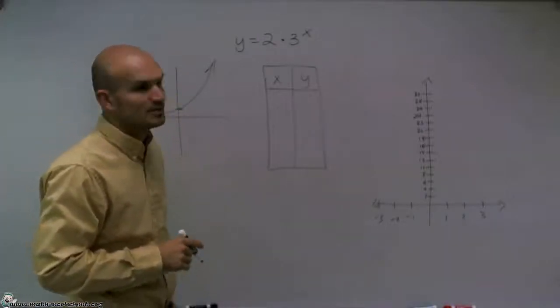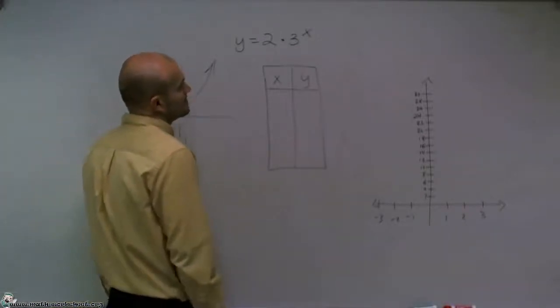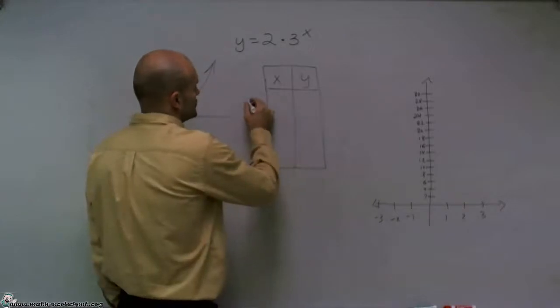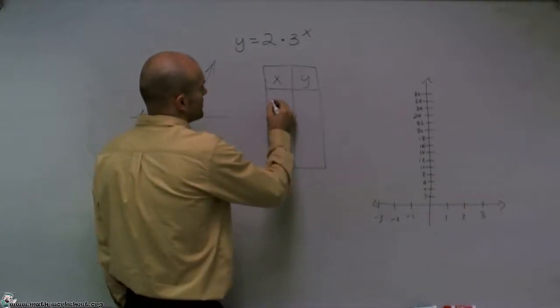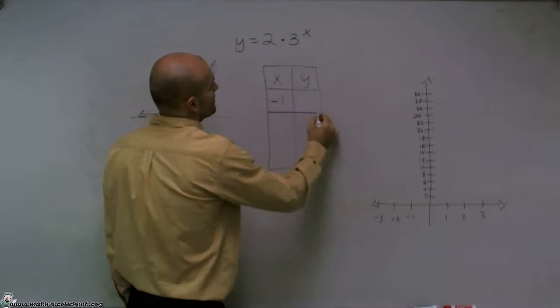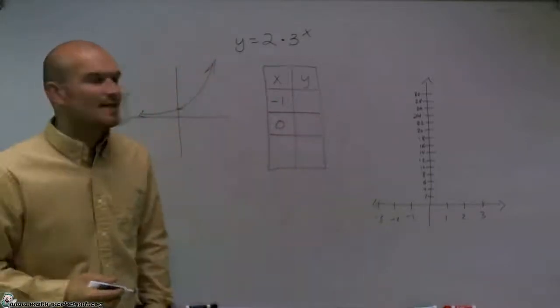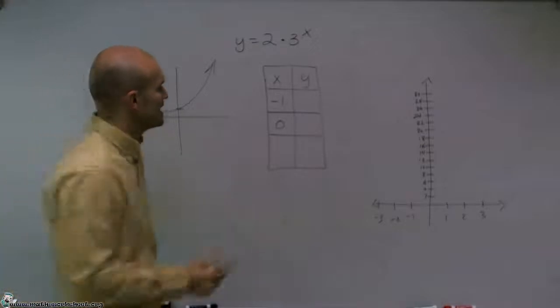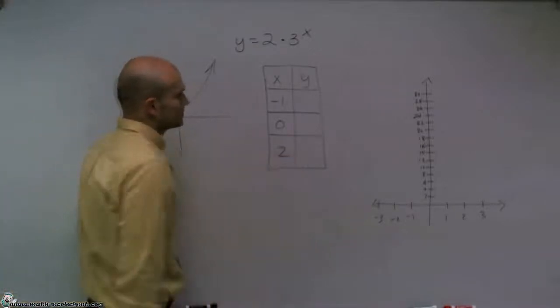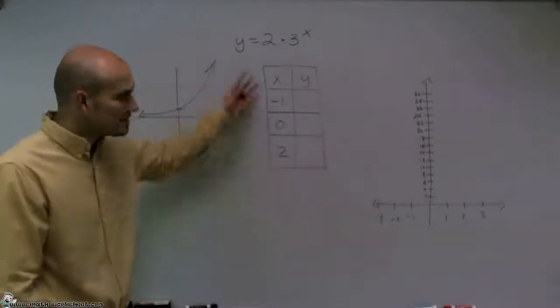The three points I'm going to choose to pick, let's see. I can pick x equals negative 1, x equals 0 is always a great choice, and then let's choose x equals positive 2. These are just three random points that I picked.